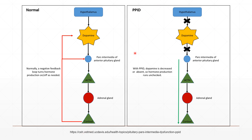Pituitary pars intermedia dysfunction (PPID) is an age-related endocrine disorder common in older equids. It involves dysfunction of the pars intermedia of the pituitary gland as well as the adrenal gland. PPID is caused by the degeneration of neurons affecting the production of hormones such as ACTH, or adrenocorticotropic hormone. Common clinical signs include a long curly hair coat, delayed shedding, loss of muscle, poor immune function, and laminitis.